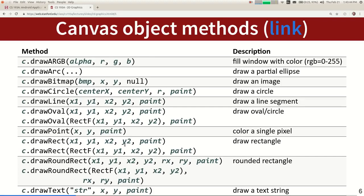Sometimes you pass a Paint object to specify what color you want. If you want a red rectangle, you pass a Paint object that stores the red color in it. That's mostly the set of methods on Canvas — I listed the ones you'd really want to use.